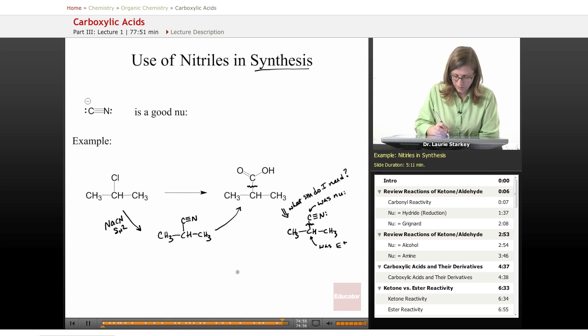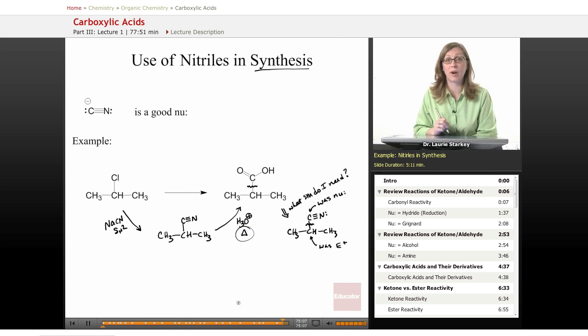Once I have the cyano group, now I can convert it to the carboxylic acid by hydrolysis. I want to trade those CN bonds for CO bonds. That's hydrolysis, H3O+ with heat, because we want it to not stop at the amide. We want it to go all the way to the carboxylic acid. That's a forcing reaction.